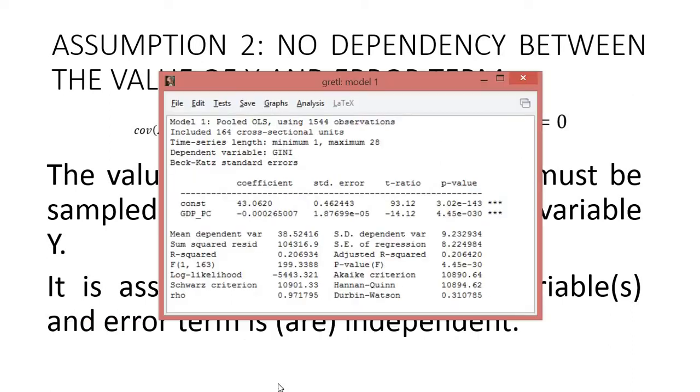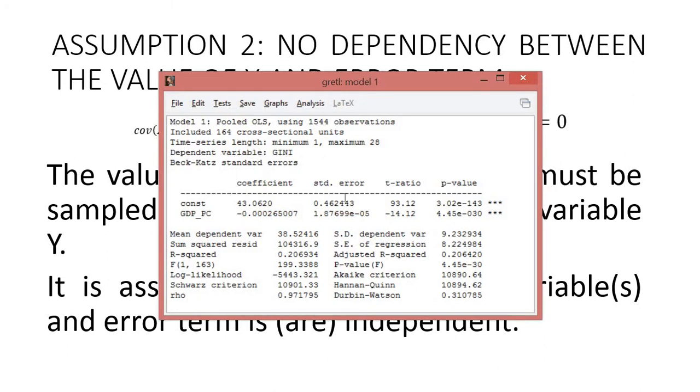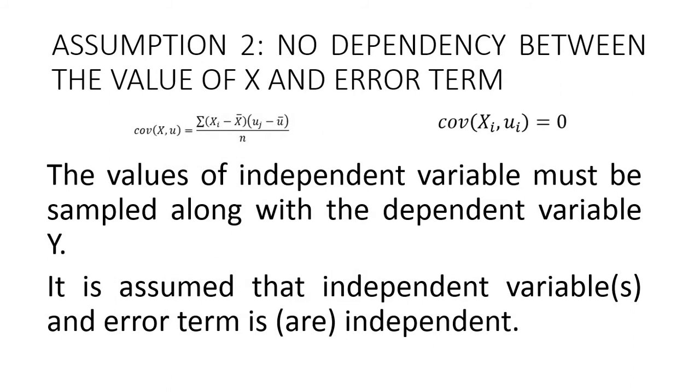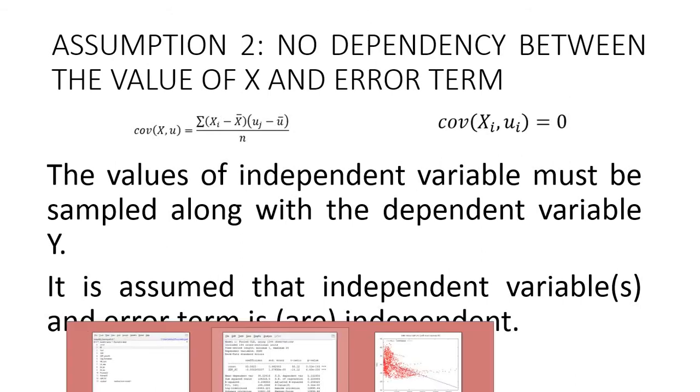So in order to do this, you have to go back to the output of the model and save residuals. So now I have all the values of those distances between empirically observed values and predicted values of the independent variable.